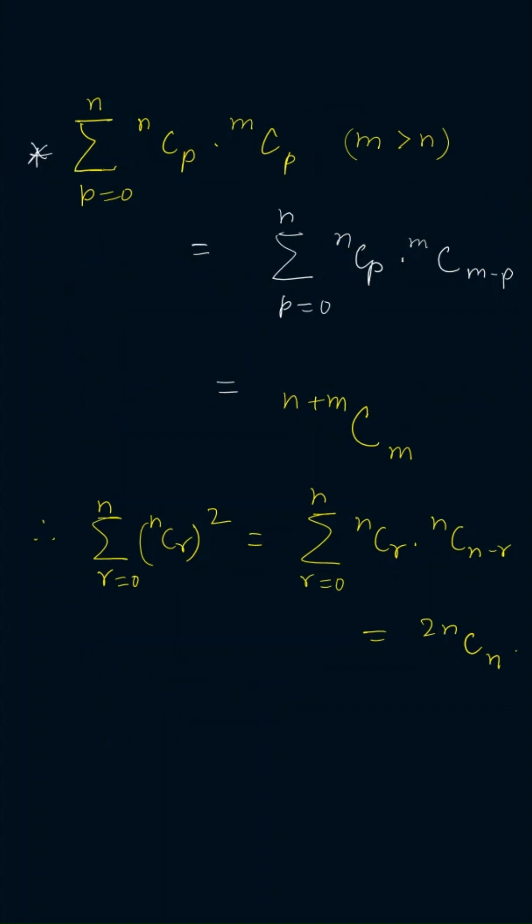Now this is one of the most interesting series of binomial coefficients: if two binomial coefficients are multiplied with each other and there is a summation running, then if the sum of the upper numbers is a constant and sum of the lower numbers is a constant, then we can directly add the upper numbers and directly add the lower numbers.